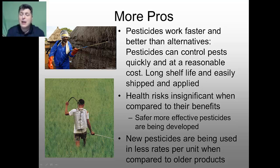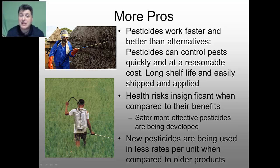Additional pros are that pesticides oftentimes work faster and better than other alternatives. While there are natural ways to eliminate pests — like introducing a natural predator into an environment, such as bringing in ladybugs to kill aphids — a pesticide is going to work a lot faster. They also have a longer shelf life and can be easily shipped and applied. When we compare their benefits, it reduces their overall health risks, making them seem more manageable, and on top of that, there are safer, more effective pesticides being developed.